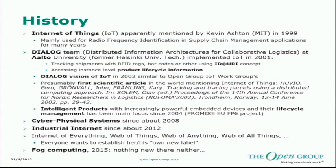I sort of like presenting the history of the Internet of Things, because not that many people actually know it. Apparently the concept was first mentioned by Kevin Ashton from MIT in 1999 — I still haven't found any trace of that, but a sufficiently great number of people have heard this. This Internet of Things view back in 1999 was very much focused on using RFID tags for supply chain management purposes.